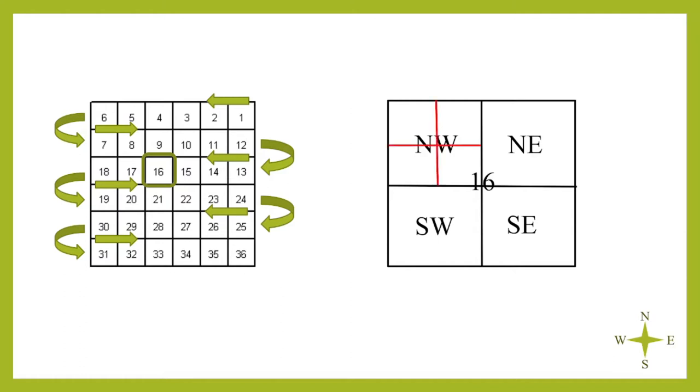Again, we can subdivide any one of these quarters a couple more times to give a more precise area definition, all of which described by their directional position. In this example, the star is located in the northwest quarter of the northwest quarter of the northwest quarter of section 16.